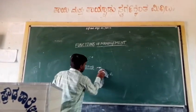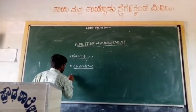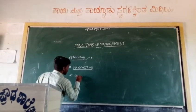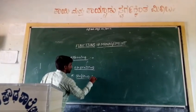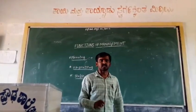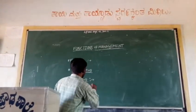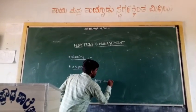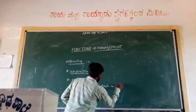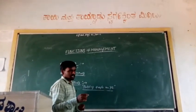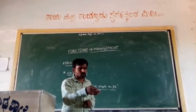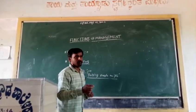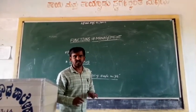Once planning and organizing are over, the next function of management is Staffing. Staffing is nothing but hiring people, or putting people on the job. In order to get the work done, you are supposed to fill each position with a suitable candidate. Staffing is nothing but putting the right people in the right places at the right time.